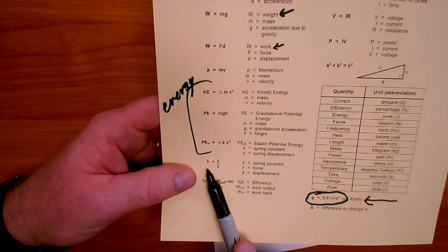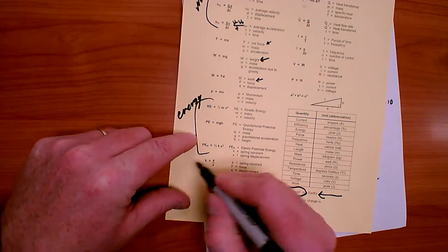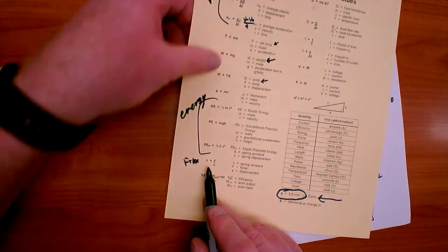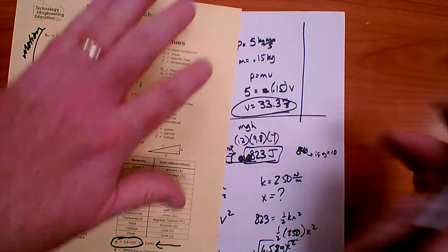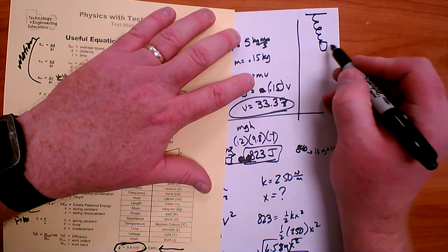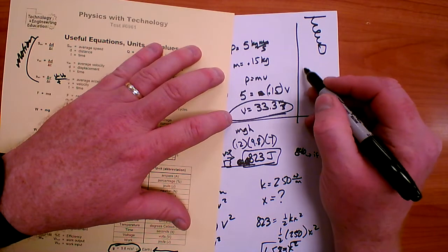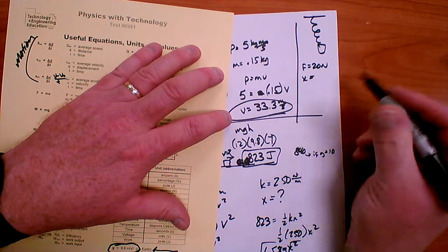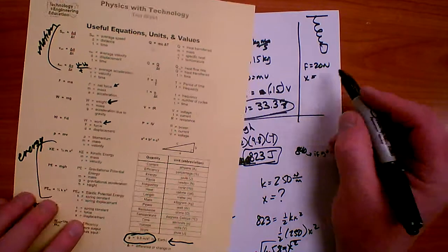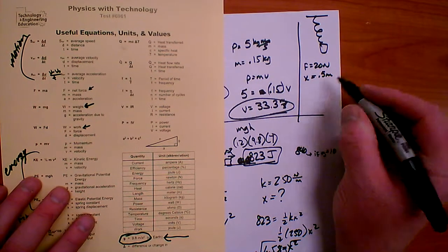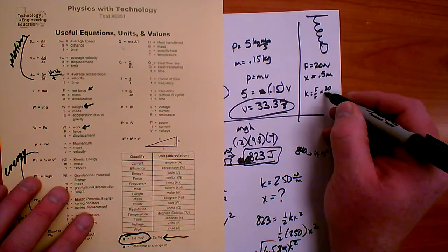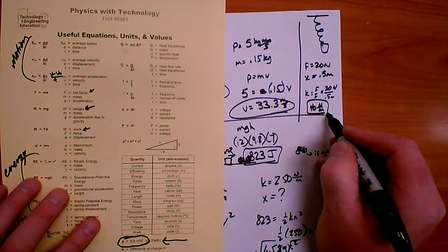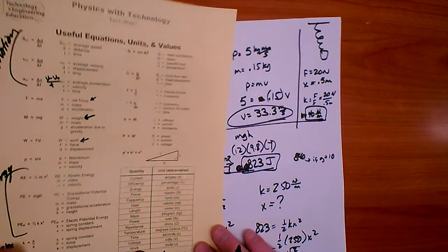The spring force equation on the sheet is written as K equals F over X — the same as F equals KX, just solved for K. For example, if a 20-Newton force displaces a spring 0.5 meters, the spring constant K equals 20 divided by 0.5, which is 40 Newtons per meter.